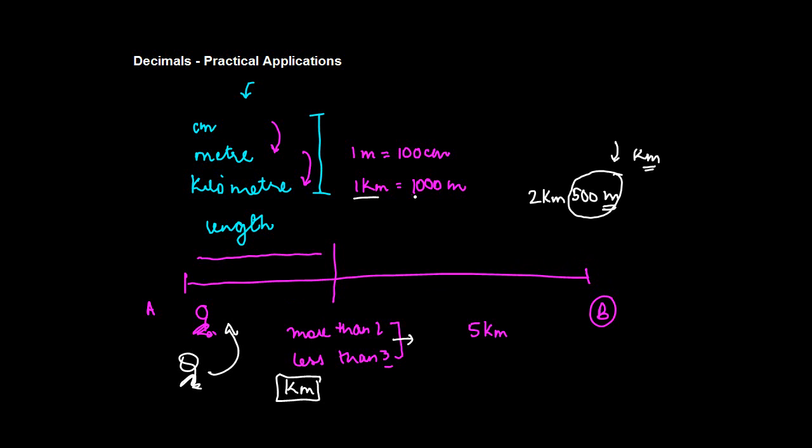We know one kilometer equals 1000 meters, so 500 meters will equal 500 upon 1000 kilometers, or simply 1/2 kilometer.